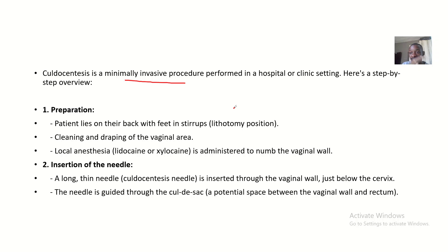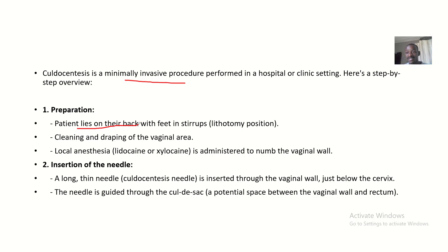Here's a step-by-step overview of how the kudosynthesis medical procedure is done. First, preparation — you need to prepare the patient. The patient will lie on their back with the feet in stirrups; that's the lithotomy position. That's basically the position most women will be in — they lie down with their legs up, hung in stirrups, so that you can access the vagina and pelvic region directly.